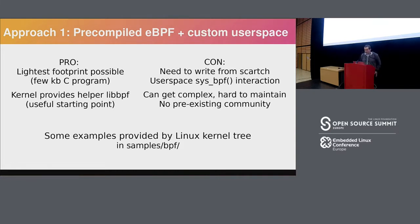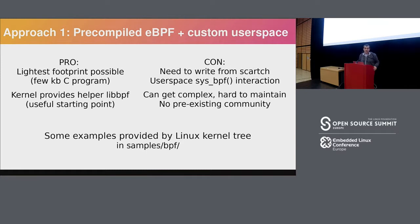We'll talk about multiple approaches for running eBPF on embedded. The simplest is to have your C program call the system call and load a pre-compiled eBPF program. This is the lightest weight — you don't need a lot of flash memory or complexity for very simple applications. But if you have a bigger application trying to do a lot with eBPF, it can get hard to maintain. Examples of this simple use case exist in the BPF kernel source.